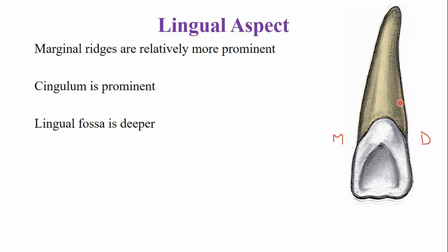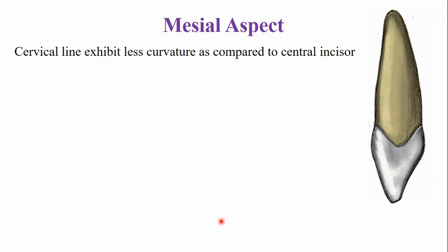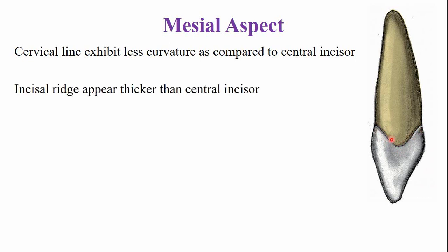From the mesial aspect, the cervical line exhibits less curvature — curving towards the incisal edge — but this curvature is less compared with that of the central incisor from the same aspect. Because the height of the crown is less, the incisal ridge appears thicker. The root apex is bluntly rounded, not sharp.